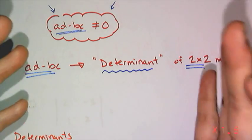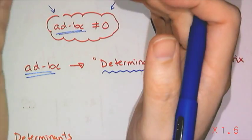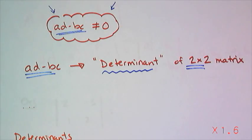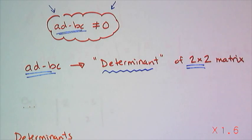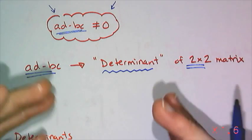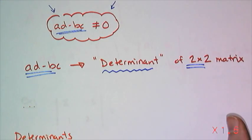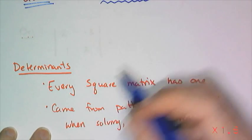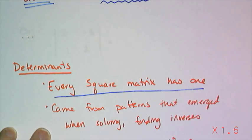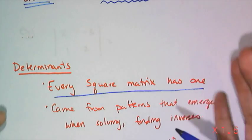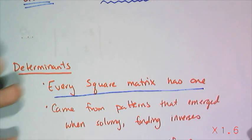They started to explore this concept of taking a matrix and boiling it down to a single constant. If the constant was 0, the matrix didn't have an inverse. And if it wasn't 0, there happened to be an inverse. And actually that number, that determinant, played a role in the actual values in the inverse. Mathematicians realized that every square matrix has a determinant, and they figured them out by looking at the patterns that emerged when they were solving systems of equations and when they were finding inverses to matrices.